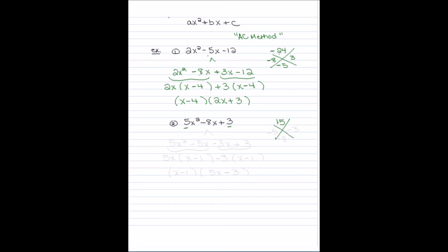Let's run through the second AC method example. I multiply A times C which is 15. I need two numbers that multiply to get 15 and add to get negative 8 — those are negative 5 and negative 3. I split the middle term using those numbers, rewriting the three-term polynomial as four terms. Then I do factor by grouping: I take out 5x, leaving (x minus 1), then take out negative 3, leaving (x minus 1). I bring (x minus 1) to the front and I'm left with (5x minus 3).